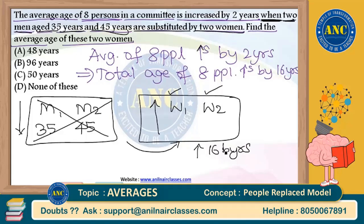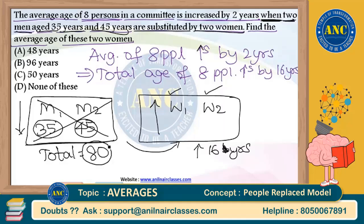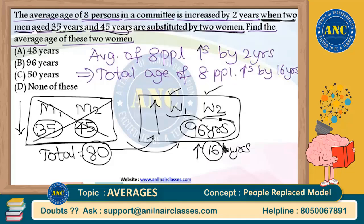That means 35 plus 45, a total of 80 years, is going outside. That same 80 years should come inside, and along with that 80 years, 16 more years should come inside. That means the total of women 1 and women 2 should be 96 years. If the total of 2 women is 96 years, the average is 96 divided by 2, which is 48 years.